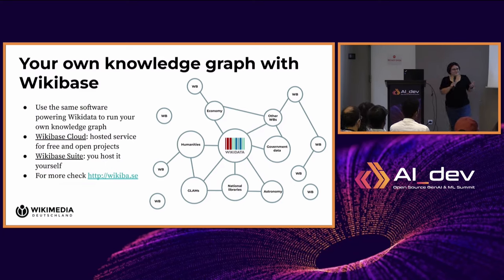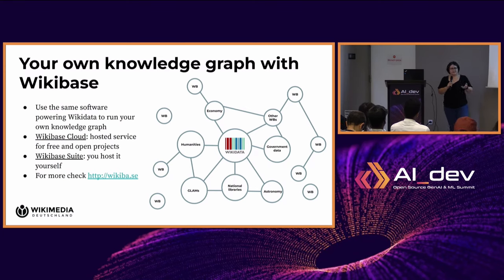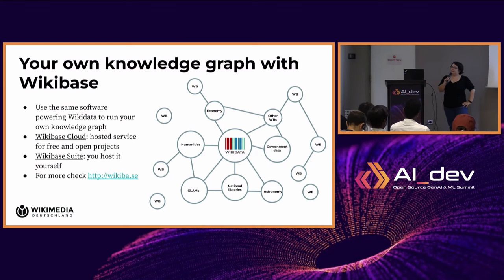Not all the data you might have is suitable to be on Wikidata itself, or maybe you want your own knowledge graph to model data in your particular way. We also released the software underlying Wikidata, called Wikibase, as free open-source software. Anyone can run their own version of Wikidata on their own hardware, or use the software as a service we provide, called Wikibase Cloud.